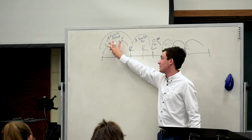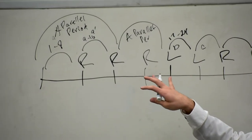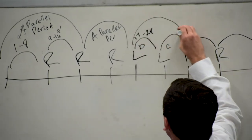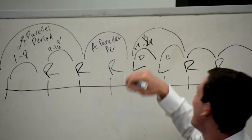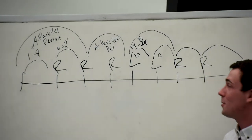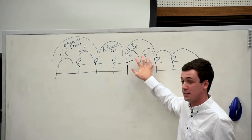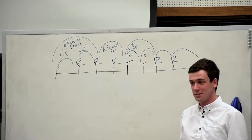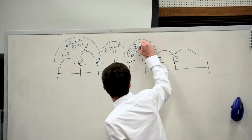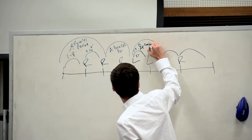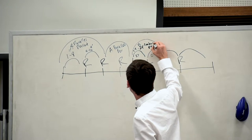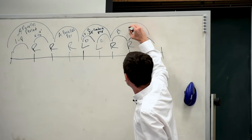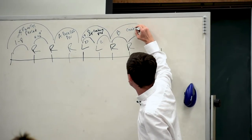So we labeled this period A. If this period is not the same as this one, what do you think we should call it? B. And as Justin was saying, if these two phrases are different in a period, what do we usually call that period? A contrasting period. So we're just going to do the same thing here — contrasting period.